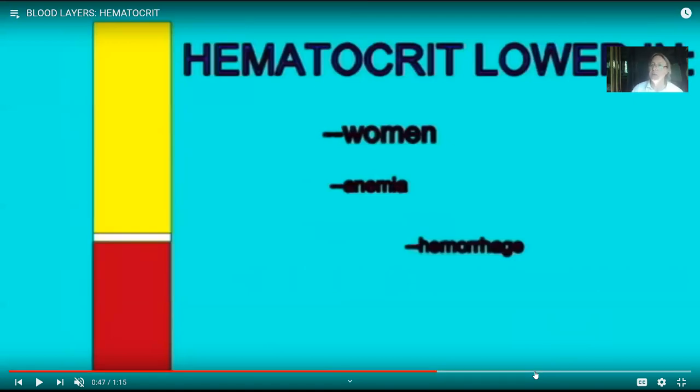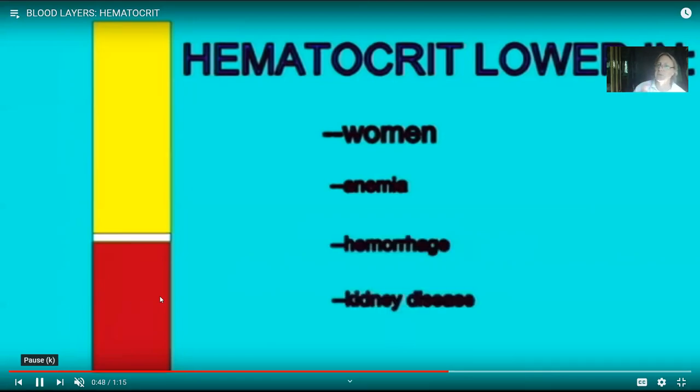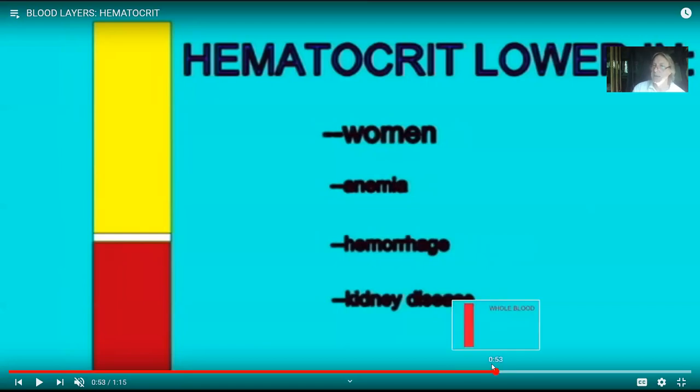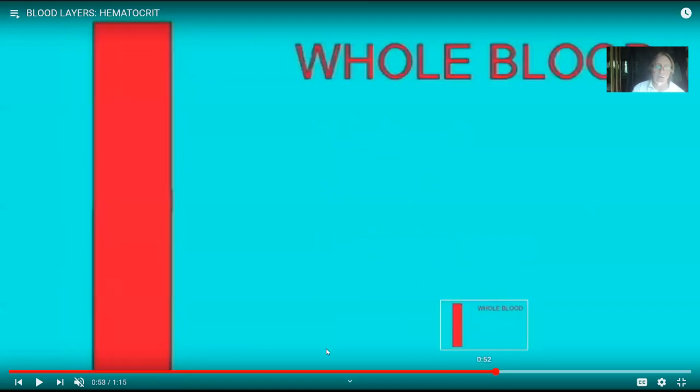Men need higher blood pressure to circulate their blood, one of the reasons that heart disease incidence is higher in men. Some individuals have a hematocrit which is too low. It's a little lower in women, but also after, say, hemorrhage or kidney disease, it goes down, as it does in the various causes of anemia. Some causes of anemia are genetic, but then sometimes it's because of poor diet, a lack of iron in diet or protein in diet, which means one can't make as many red blood cells.